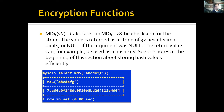Next, the MD5 function calculates a 128-bit checksum for a string. The value is returned as a string of 32 hexadecimal digits, or null if the argument was null. The return value can be used as a hash key. For example, SELECT MD5('ABCDEFG') returns the corresponding hex digest value.